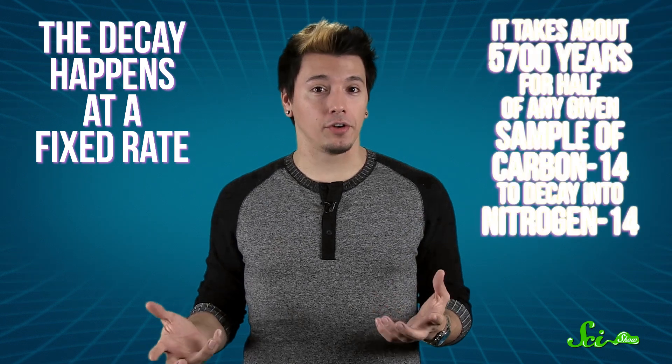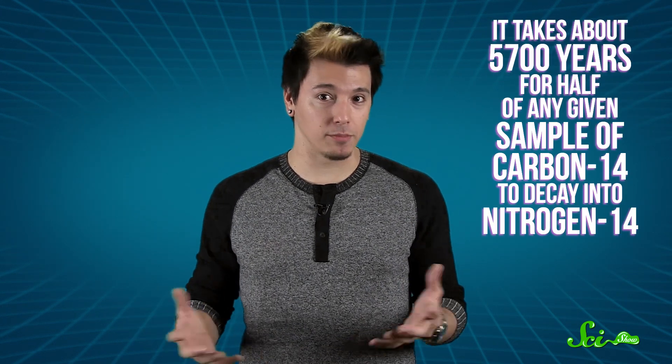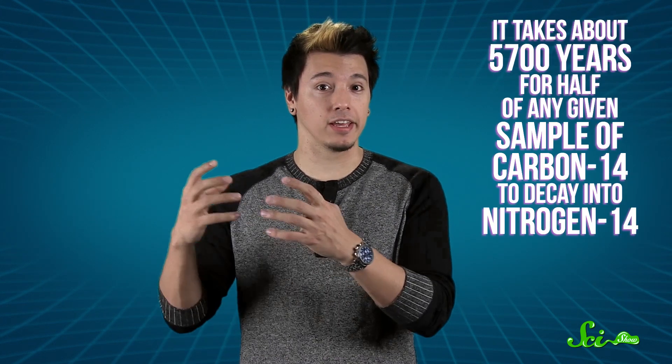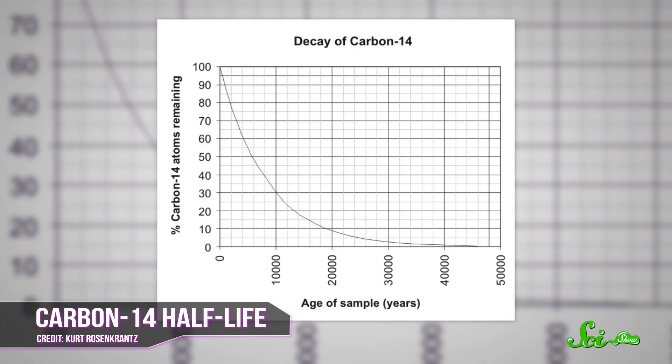We know that it takes about 5,700 years for half of any given sample of carbon-14 to decay into nitrogen-14. This time span is known as its half-life. So after one half-life, you'll have half of the C-14 that you started with. After two half-lives, you'll have one quarter. After three, you'll have an eighth, and so on.